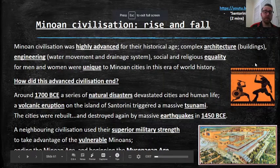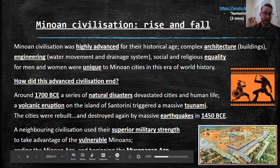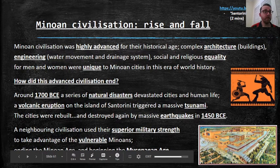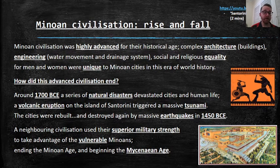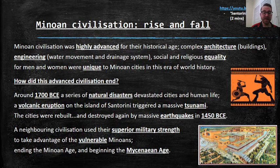But after all these things happened, a neighbouring civilization on mainland Greece — the Mycenaeans — saw what was happening. They said, 'Now's the time to take charge, to take advantage of these vulnerable Minoans while they're rebuilding and dusting themselves off from the volcanic ash. We're going to go in there and take power.' And that's what they did. They ended the Minoan Age, and now we had the beginning of the Mycenaean Age.